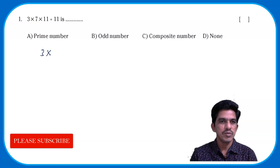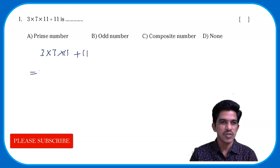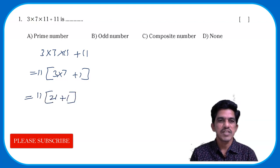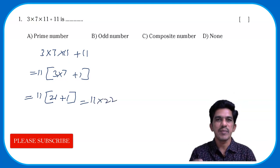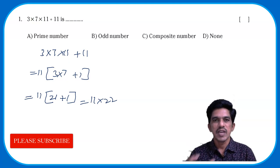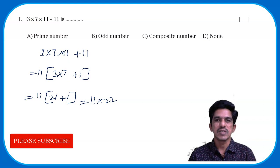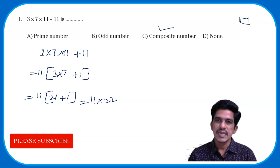The number is 3×7×11 + 11. When you take out 11, it becomes 11×(3×7 + 1), which is 11×(21 + 1) = 11×22. The number can be written as a product of 11 and 22. Since it has more than 2 factors, this is a composite number. So C is the correct answer.